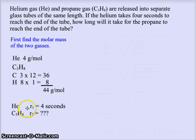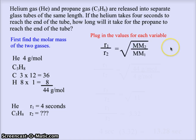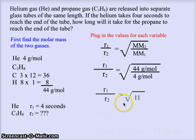Helium has a rate of four seconds through the tube, and propane has a rate that we're looking for. The ratio of the rates is determined by the formula for Graham's Law: R1 over R2 equals the square root of molar mass two divided by molar mass one. So R1 over R2 equals the square root of 44 over four. R1 over R2 equals the square root of 11.